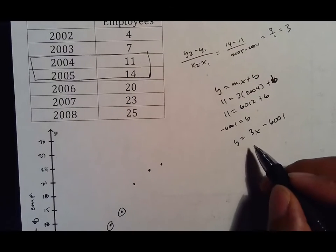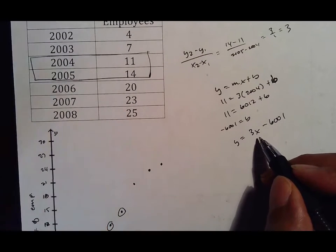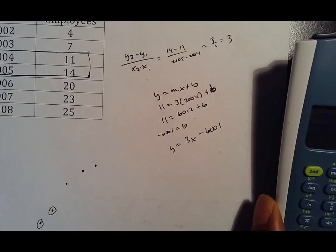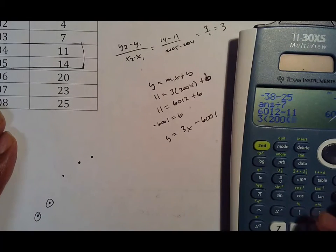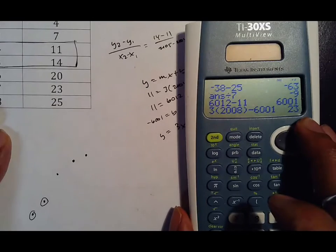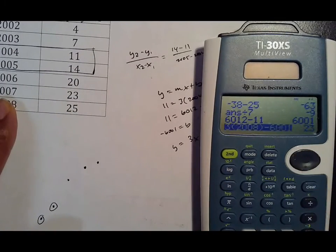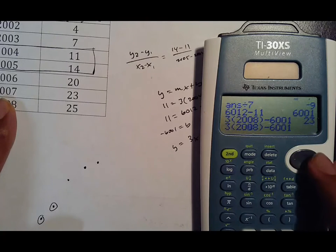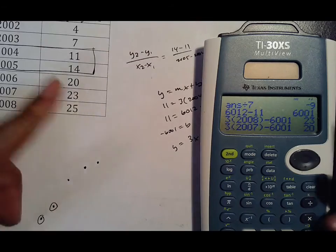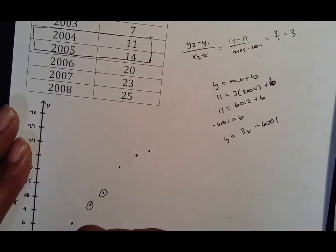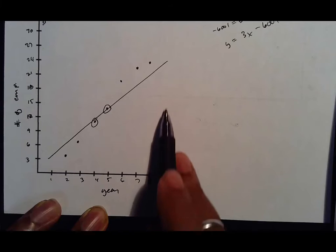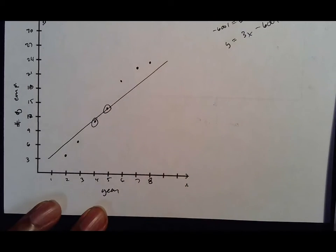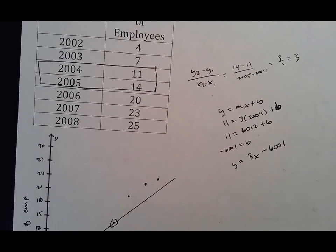What should happen is if I were to plug in one of these numbers, it should be pretty close. If I put 2,008 in here because that's my x, so if I did 3 times 2,008 minus 6,001, notice that I get the answer of 23, which is pretty close to what I'm supposed to have. If I do the same thing with 2007, I get 20, which again is around where it should be. Your line of expectation is just telling you what you would expect. So if I was wondering what's going to happen about 2009, I could look at the line of best fit and say I should be right around 24, 25 employees or whatever it might be.